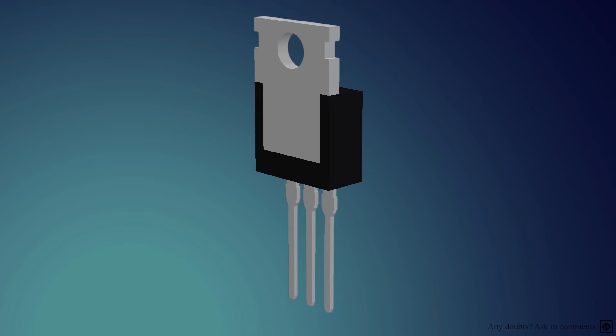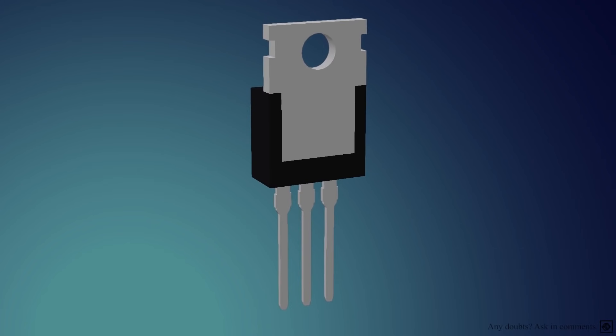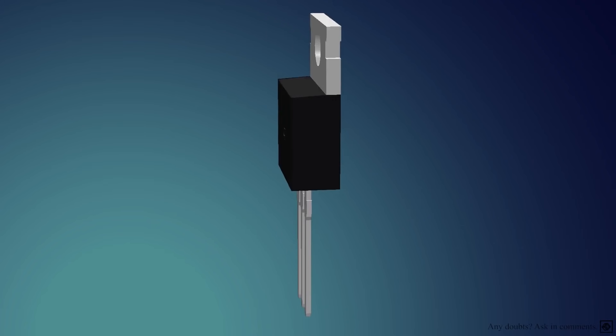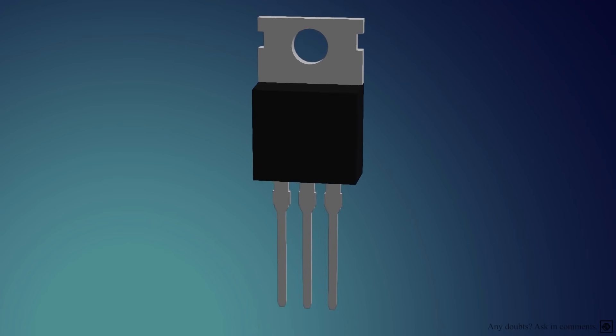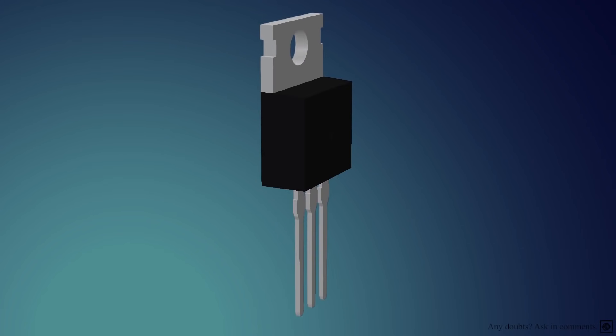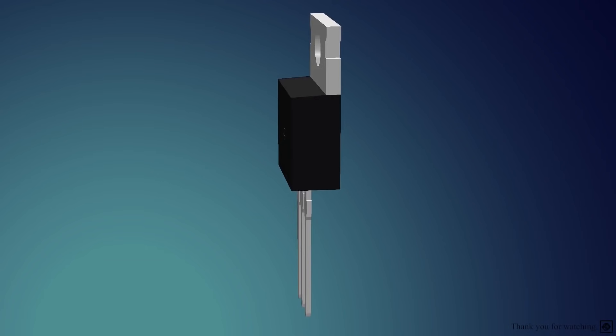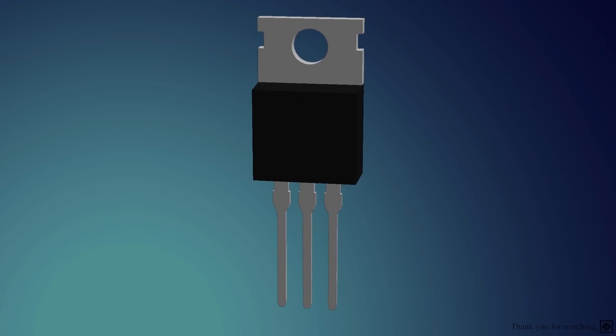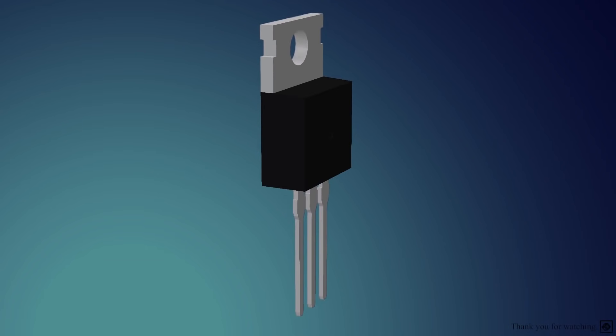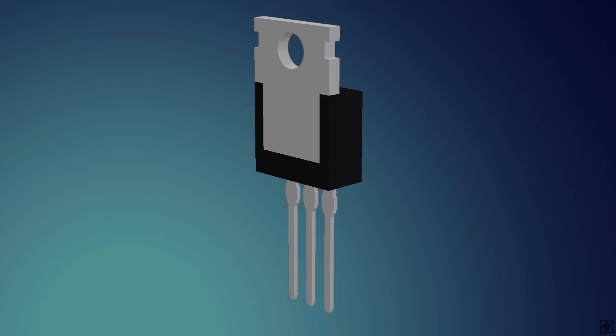These MOSFETs are present in almost all electronic devices and they need electricity to work. Watch the video on how the mobile charger works, or continue by watching the video on how a mobile knows about its orientation.